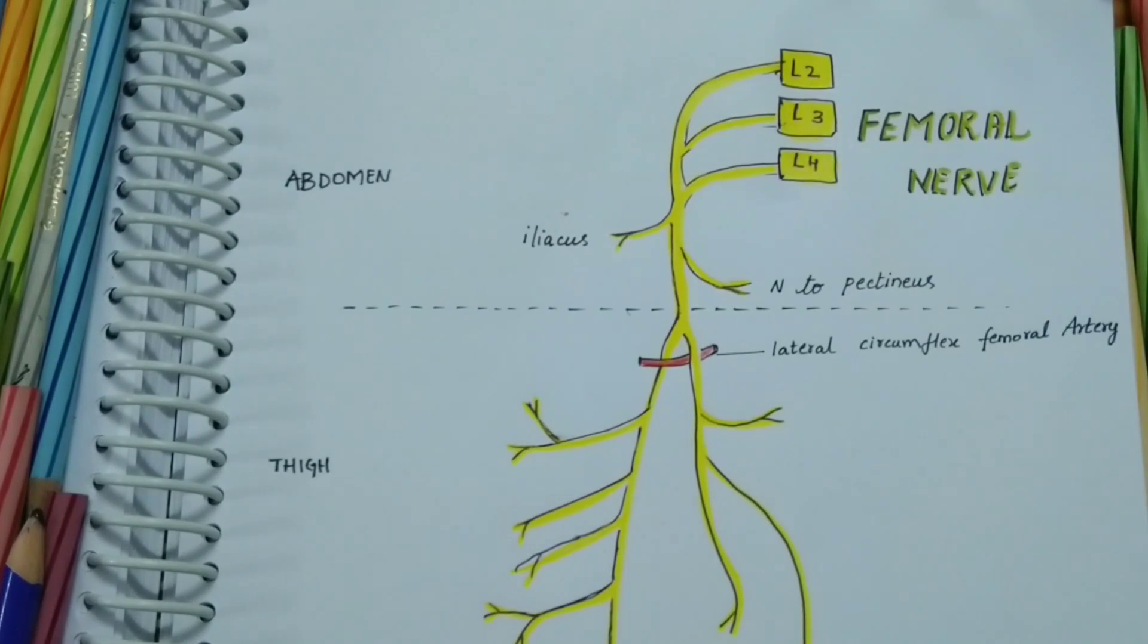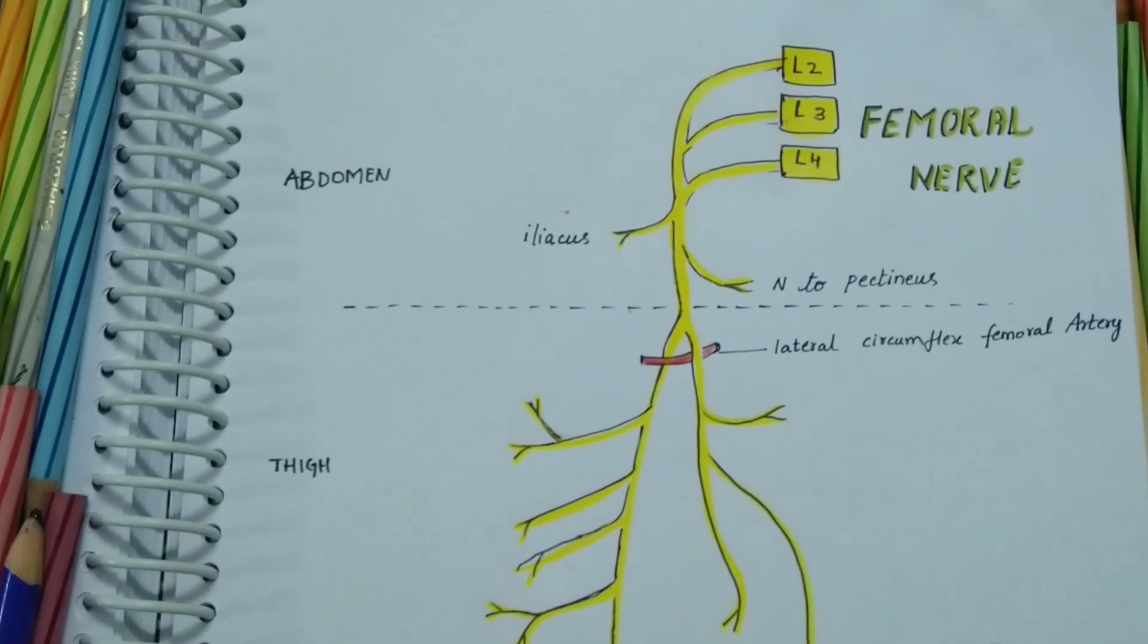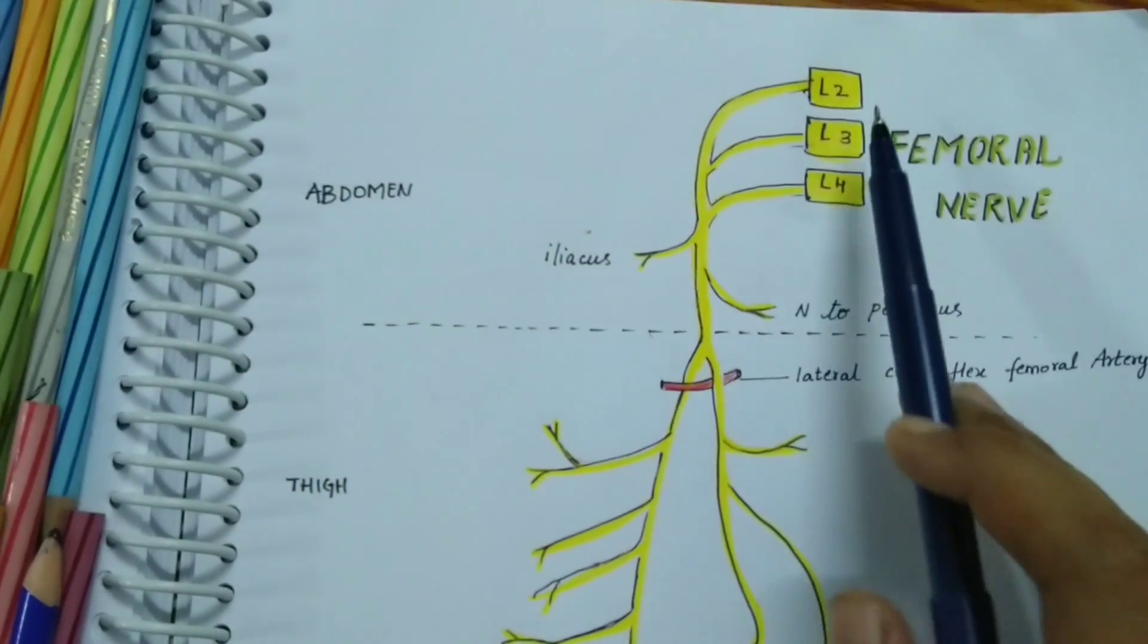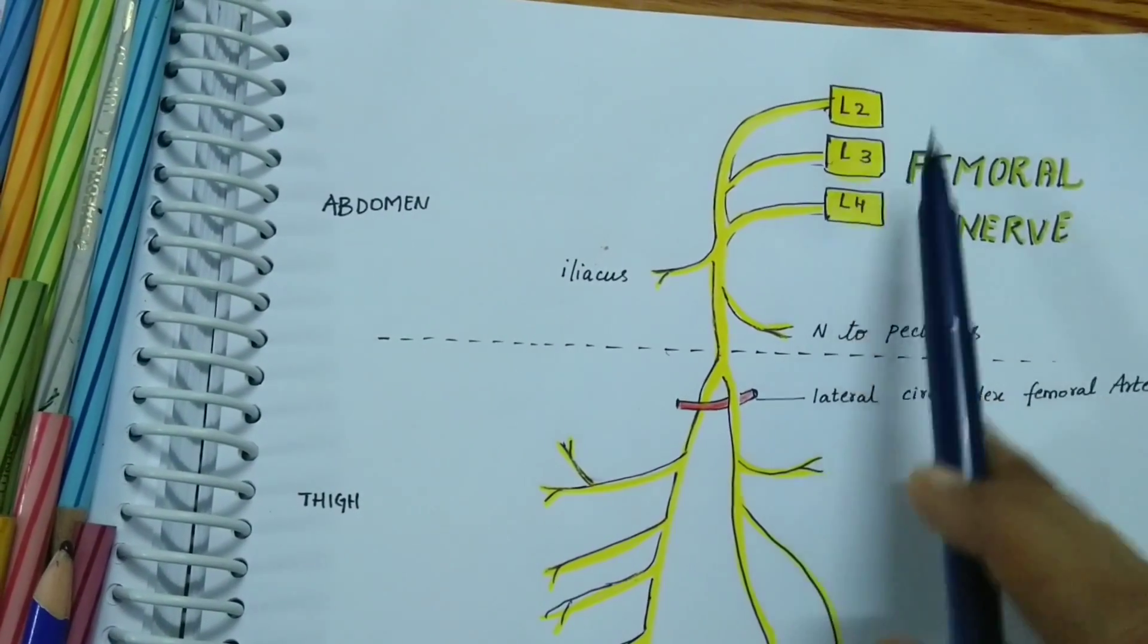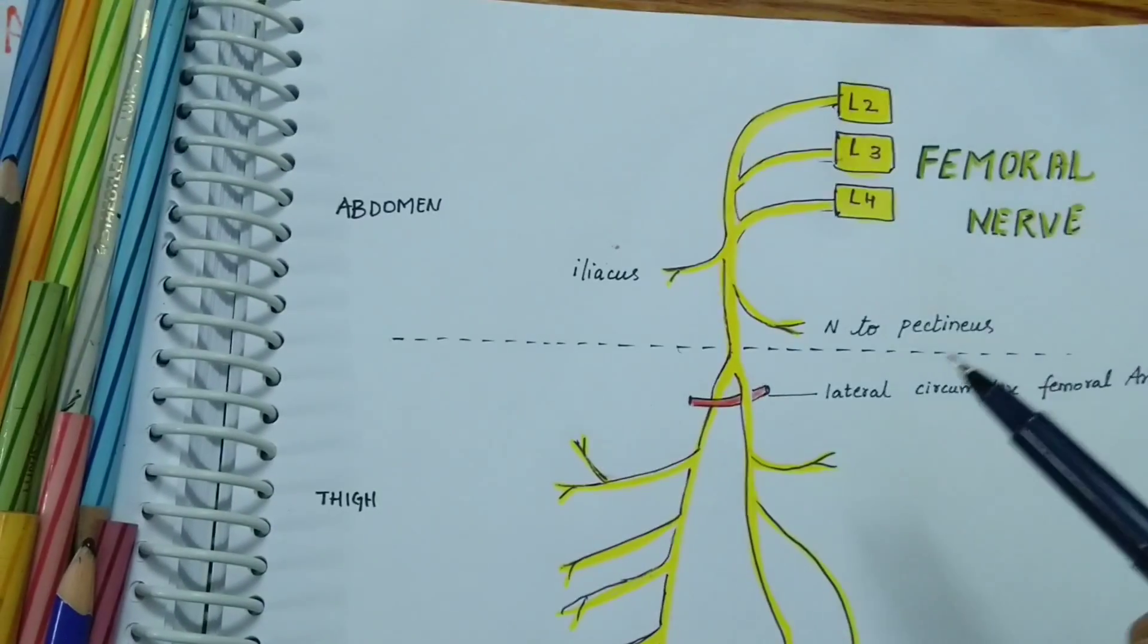The femoral nerve is the nerve of the anterior compartment of thigh. It arises within the psoas major muscle from the posterior division of the ventral rami of lumbar vertebrae L2, L3, and L4. It descends through the psoas major.